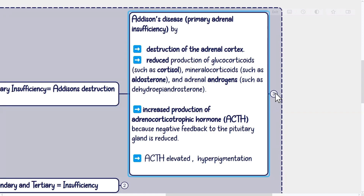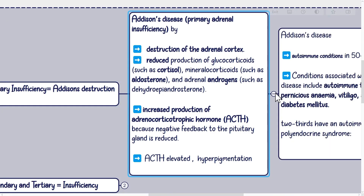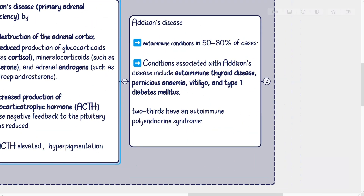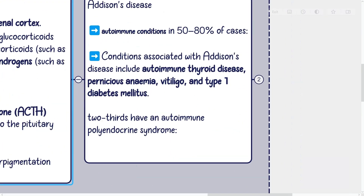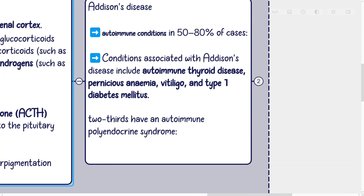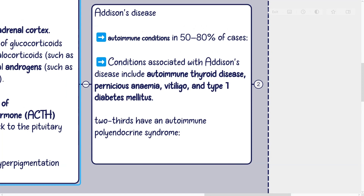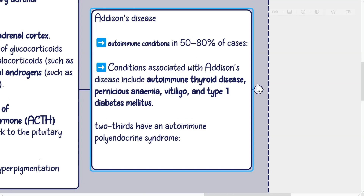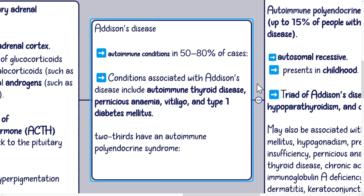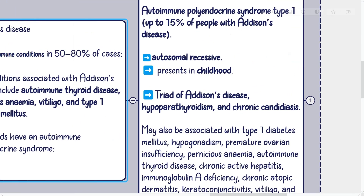Addison's disease may occur in isolation but is associated with other autoimmune conditions in 50 to 80% of cases. Conditions associated with Addison's disease include autoimmune thyroid disease, pernicious anemia, vitiligo, and type 1 diabetes mellitus. Of people with autoimmune Addison's disease, about two-thirds have an autoimmune polyendocrine syndrome.